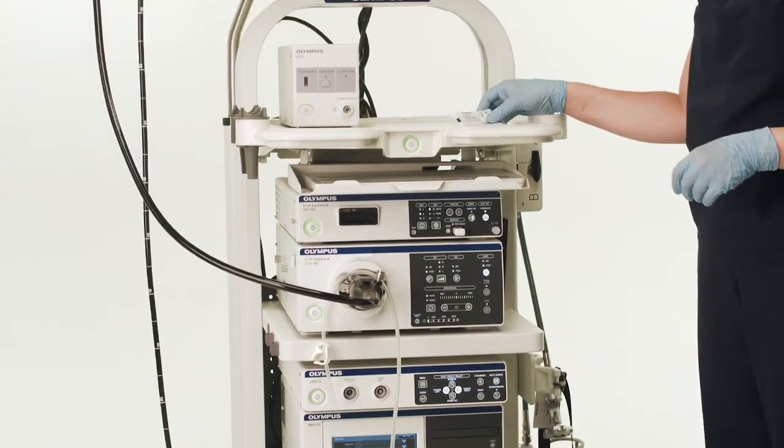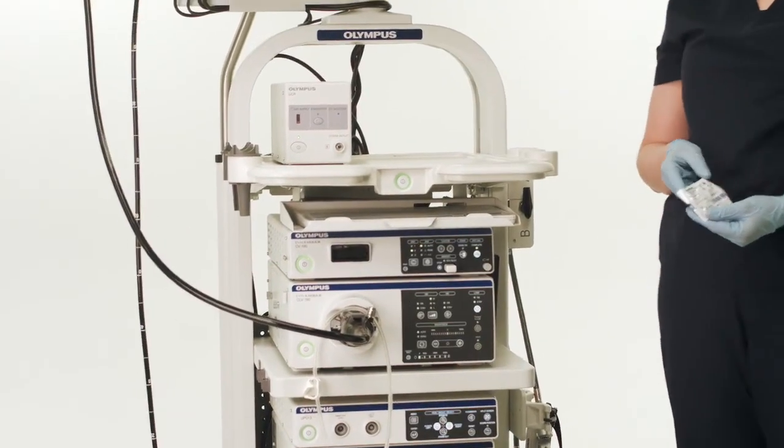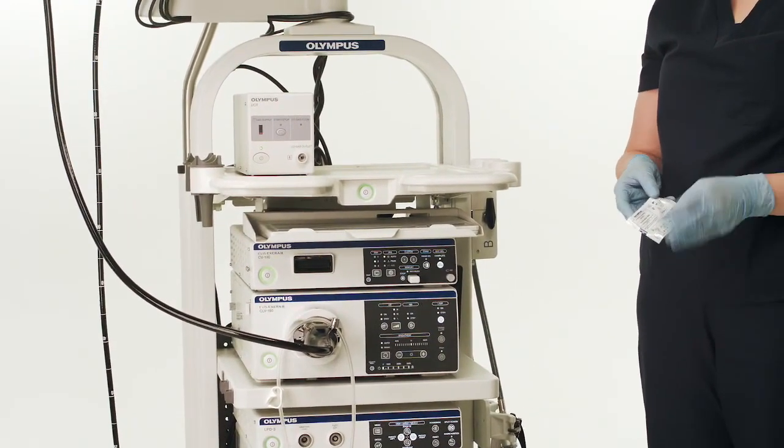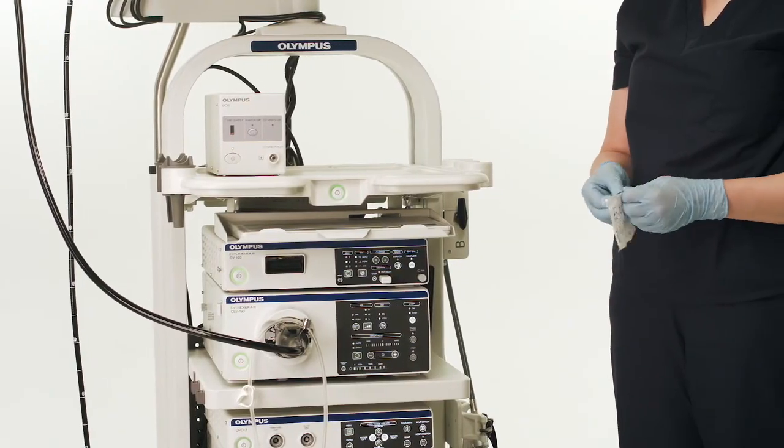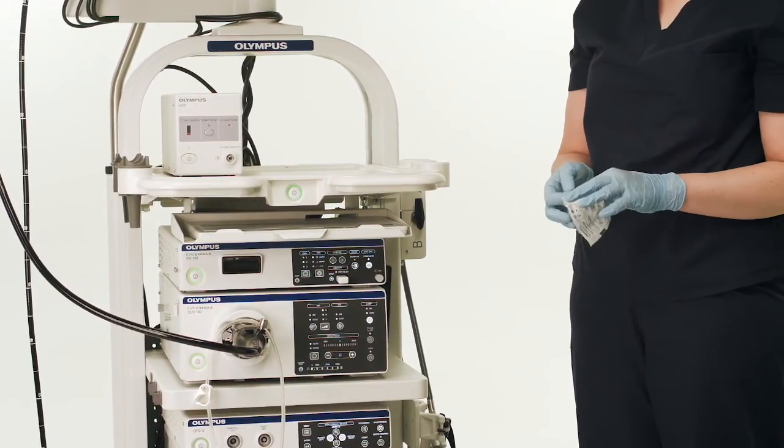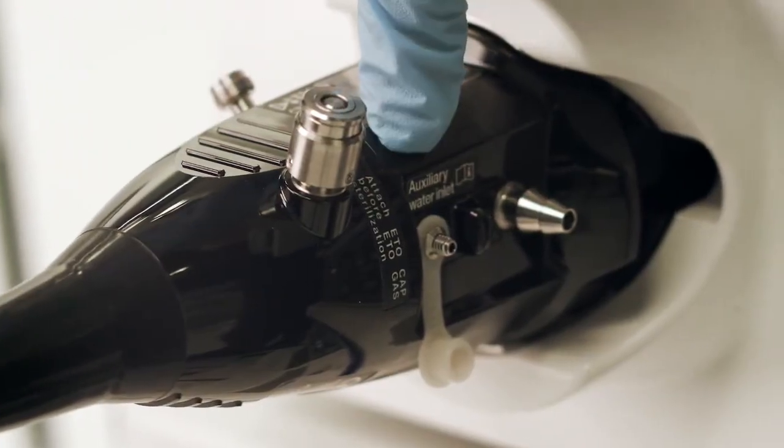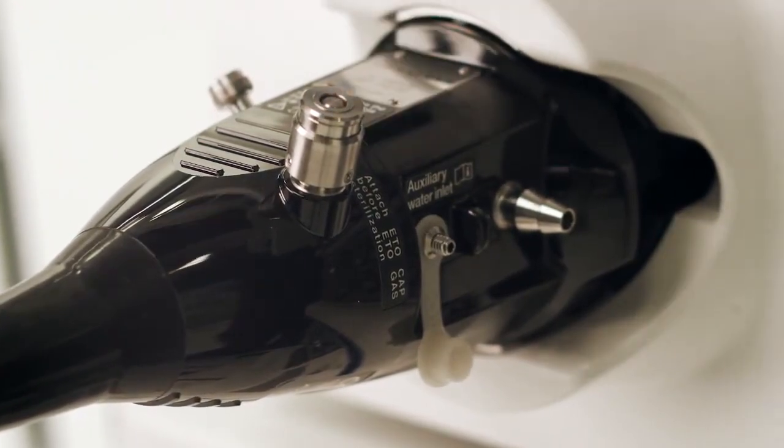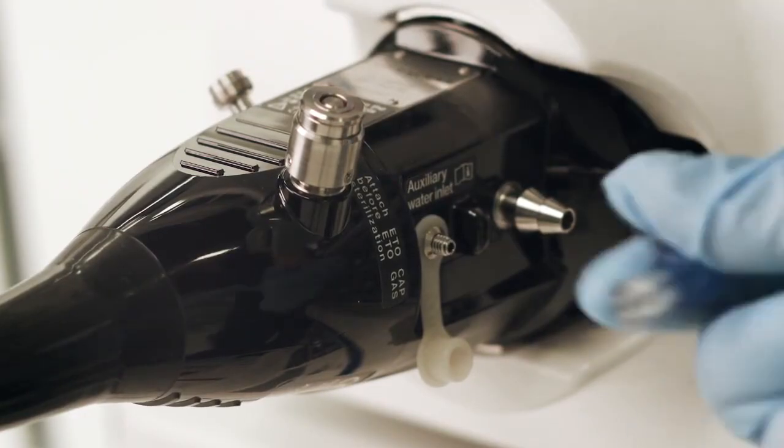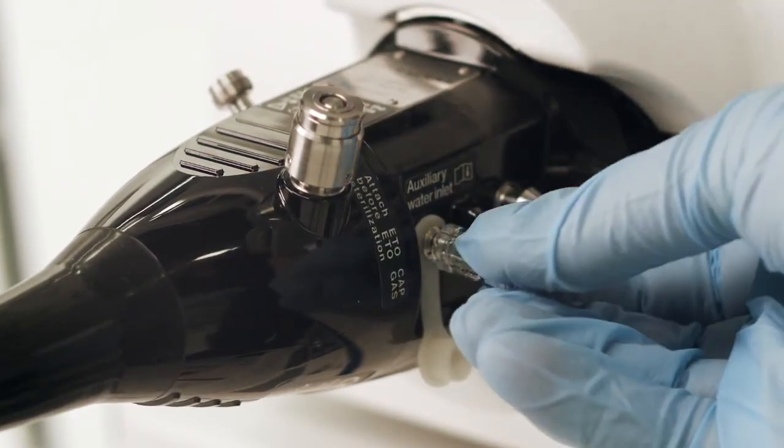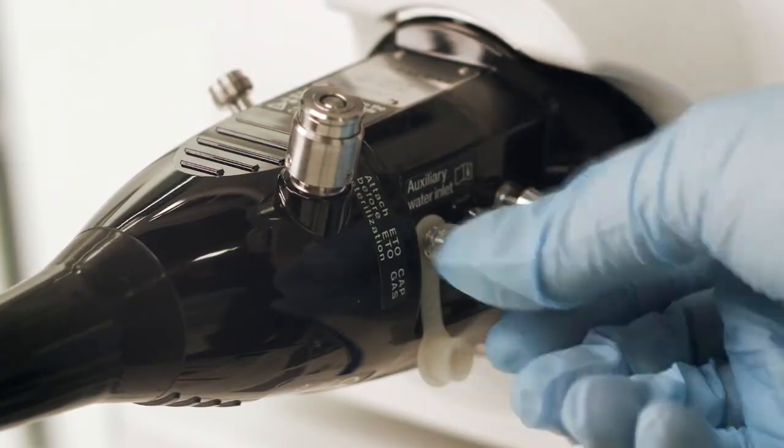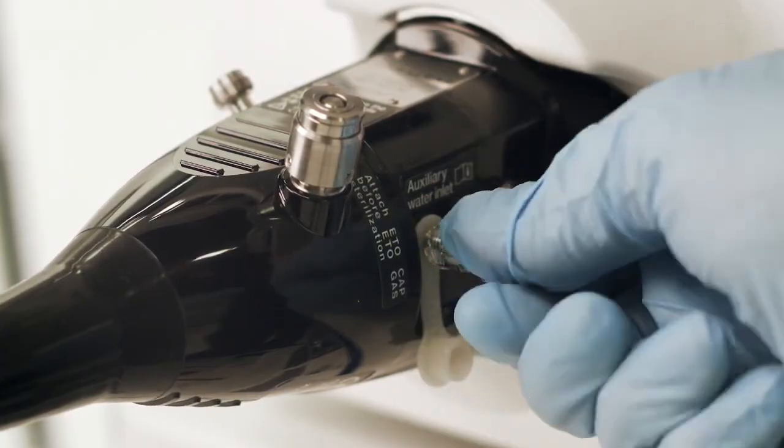Now locate the MAJ 1652 auxiliary channel adapter, removing the adapter from its sterile packaging. Locate the auxiliary channel connection point on your Olympus endoscope. Attach the adapter to the auxiliary channel connection point by screwing the adapter down onto the connection. Be sure that this connection is tight.